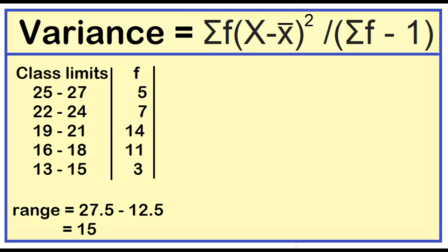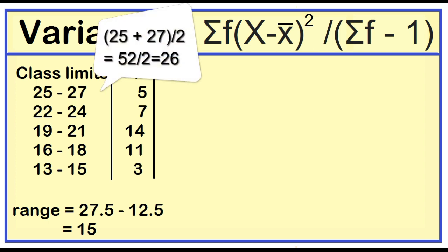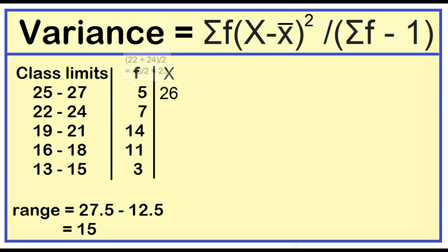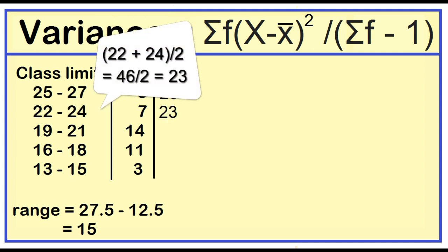Let's add a column for class marks. To find the class mark, just add the lower limit and the upper limit, then divide the result by 2. 25 plus 27 is 52 divided by 2 is 26. 22 plus 24 is 46 divided by 2 is 23.